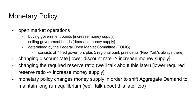The second tool available for the Fed is changing the discount rate. By lowering the discount rate you increase the money supply, and by increasing the discount rate you decrease it. The last tool is changing the reserve requirements. By increasing the required reserve ratio you decrease the money supply, and by decreasing it you increase the money supply.